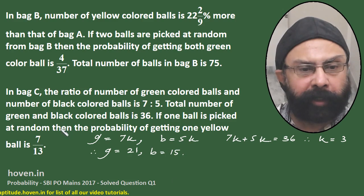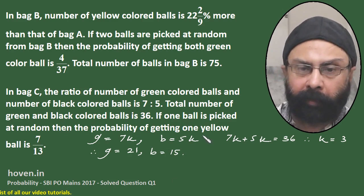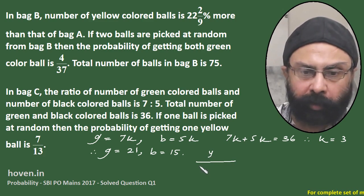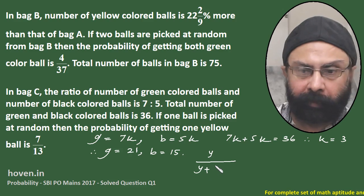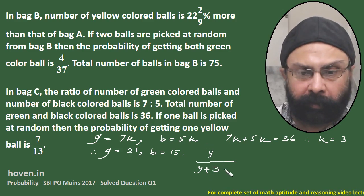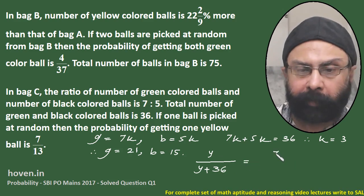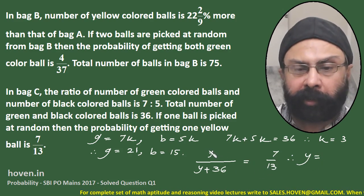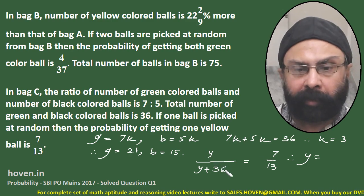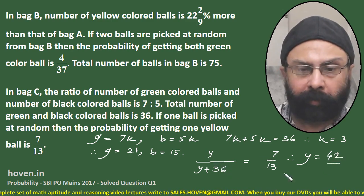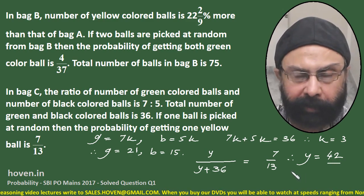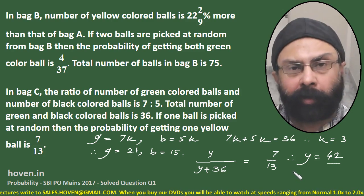If one ball is picked at random, the probability of getting a yellow ball is given. The probability = Y / (Y + 36) = 7/13. So 13Y = 7(Y + 36), giving 6Y = 252, Y = 42. So we now have the complete count of balls in all three bags and can move to the questions.